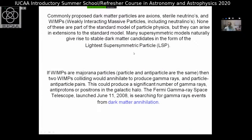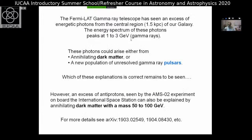This is not the only candidate for dark matter. There are many others, including neutralinos — the lightest supersymmetric partner, a neutral particle. There are also axions and other candidates. An intriguing possibility is that if WIMPs are Majorana particles — meaning the particle and antiparticle are the same — then two WIMPs colliding would annihilate and produce gamma rays, showing up as a significant gamma-ray excess in the galactic center. The Fermi Gamma-ray Space Telescope is searching for gamma rays from dark matter annihilation.